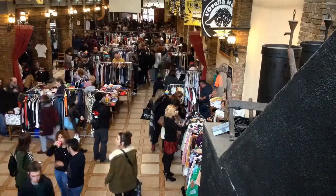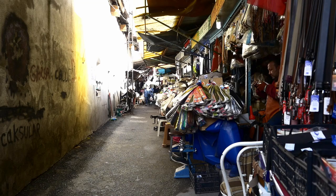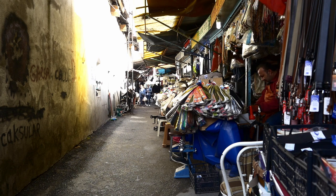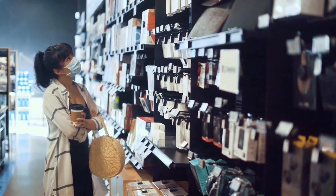An item's natural price is when the price is neither more nor less than is sufficient to pay the rent of the land, the wages of the labour, and the profits of the stock employed in raising, preparing, and bringing it to market. When a commodity is sold at its natural price, it includes enough profit for the seller not to lose on the trade the revenue they could have made with a different use of the stock, and enough profit to give them revenue to live off.